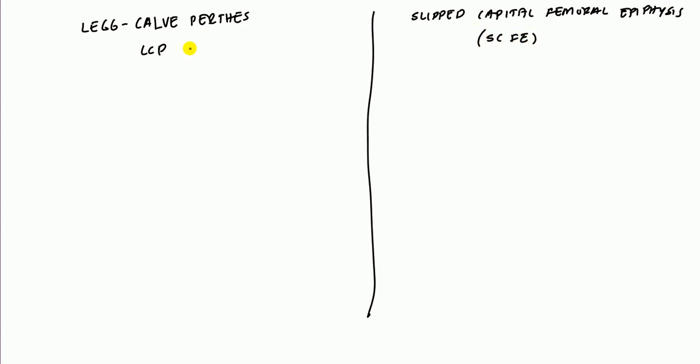Okay, in today's video lecture, we're going to look at two pathologies of the femoral head. The first one is Legg-Calvé-Perthes, which is avascular necrosis of the epiphyseal plate. And the other one is slipped capital femoral epiphysis. The acronyms for these are LCP and SCFE.